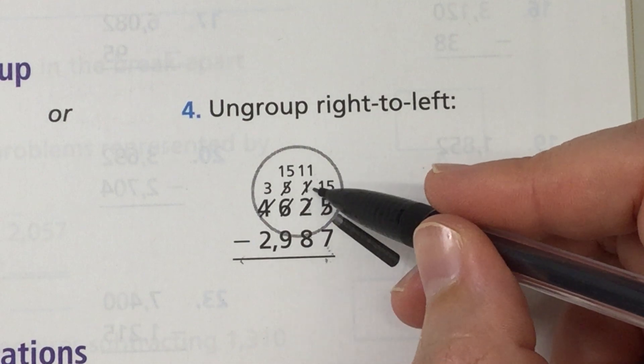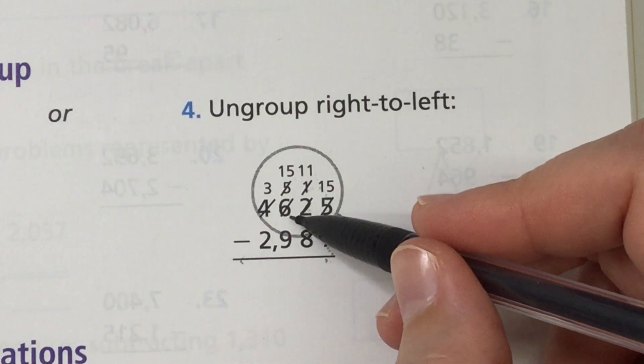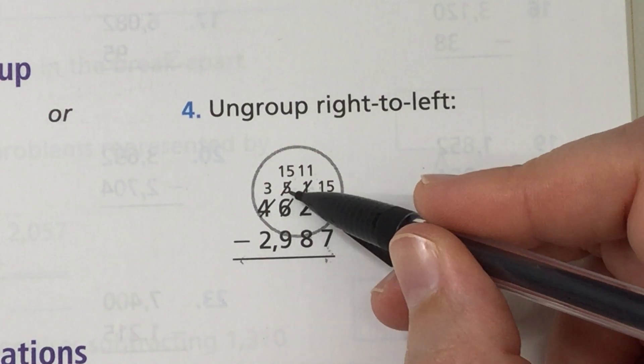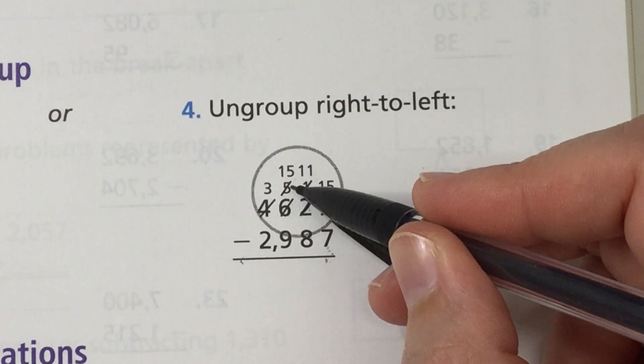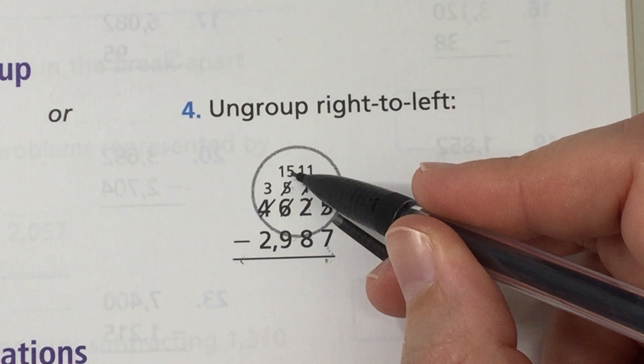And where did it come from? Oh yeah it came from over there on the left, the hundreds place. So that 6 became a 5. Now that 5 has to become a 15 because 5 minus 9 is not possible. So it has to change to a 15.